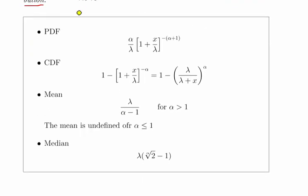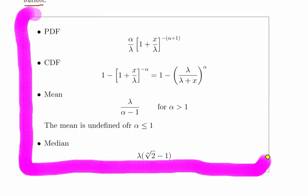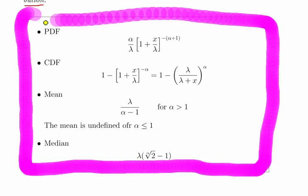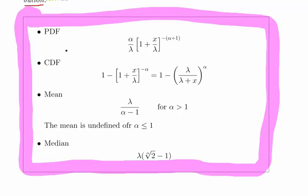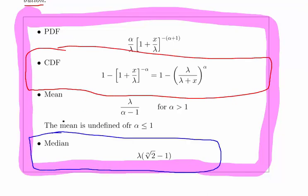Here are all the key components of the Pareto Type II distribution. You can look these up in books. What we're going to do is base ourselves off the CDF, and the question asks us to derive the median. I'm going to show how we go from the CDF, the cumulative distribution function, to the median.